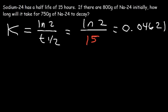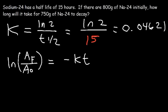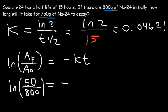Our goal is to find time T. Use this form of the equation: the natural log of the final amount divided by the original amount equals negative KT. The final amount is 50 — that's 800 minus the 750 that decayed. The original amount A₀ is 800 and K is 0.04621. Evaluating ln(50/800) gives negative 2.772589.